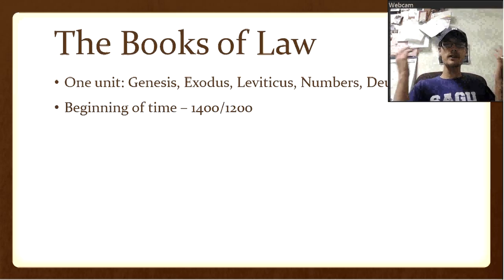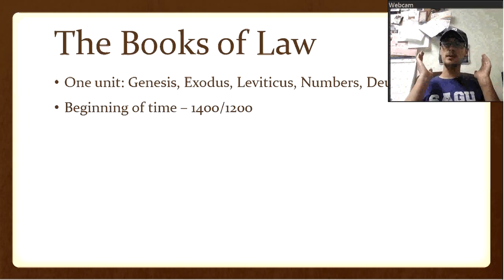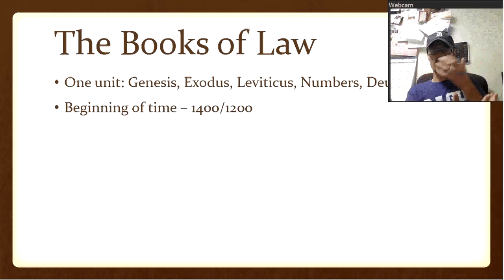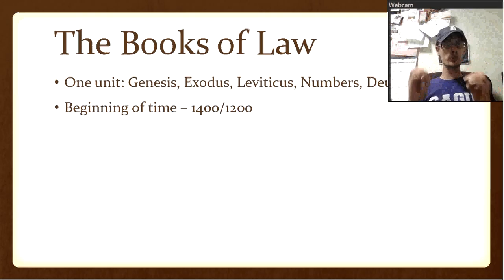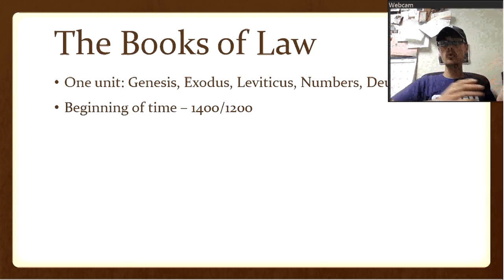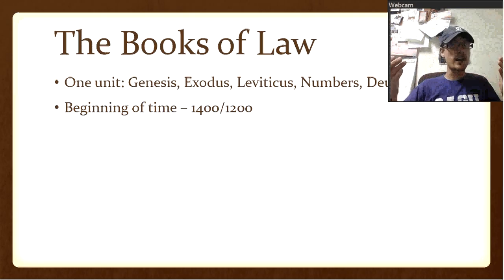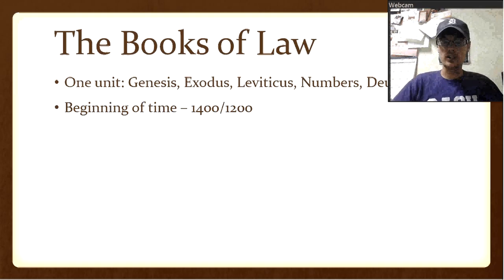As far as when the events take place: Genesis picks up at the beginning of time, when God created things. It doesn't answer all the scientific questions people have — it just blows right through and highlights the important things. God created it, and it was good, without sin. It takes us from the beginning of time all the way down to around 1400 or 1200 BC, depending on when the Exodus happened.